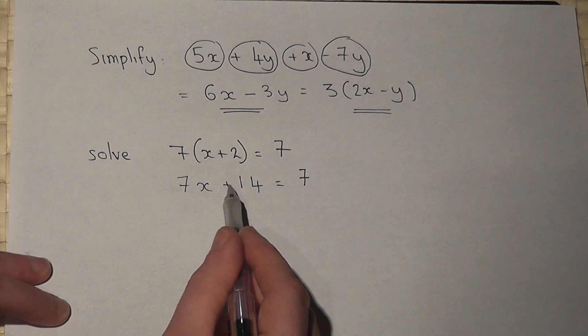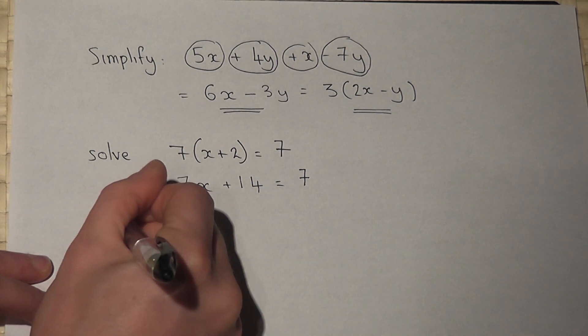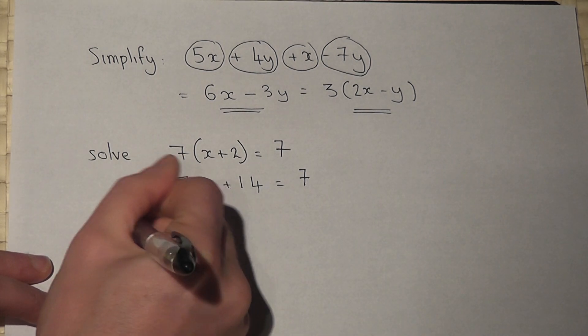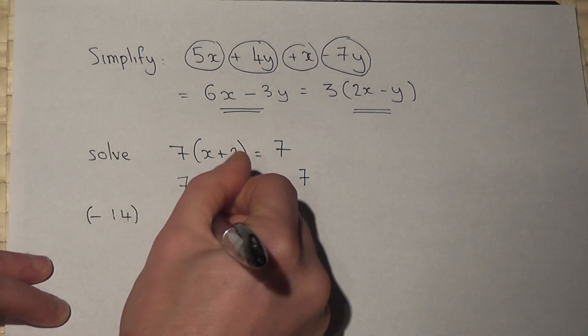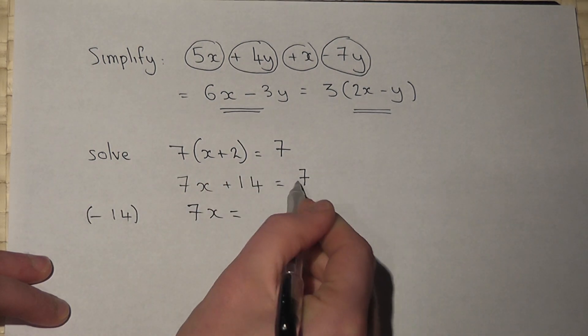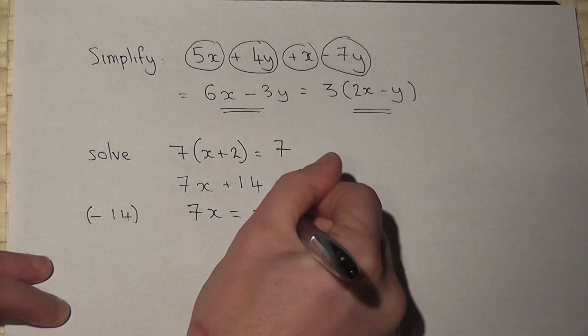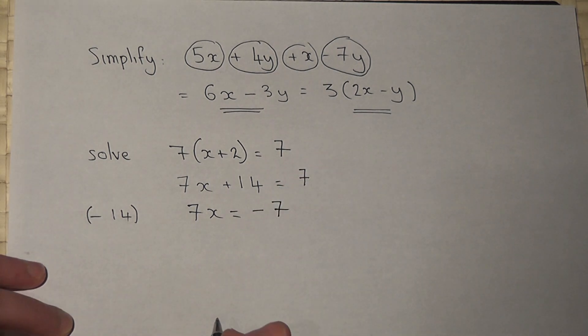I've now got a plus 14. So if I take away 14 first, I get 7x equals. Now 7 take away 14 becomes negative 7. So 7x equals negative 7.